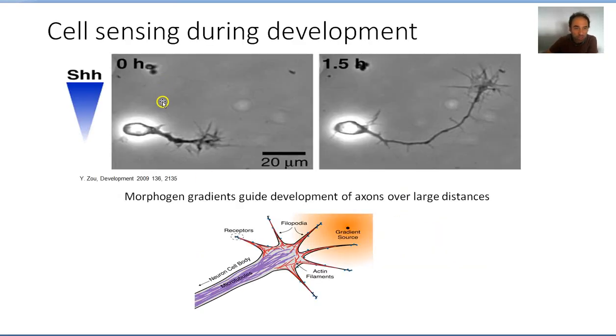This is an example where you see here a cell, and in this Sonic Hedgehog expression in a gradient, you see after some time that the axon here in black is going to turn in this direction.